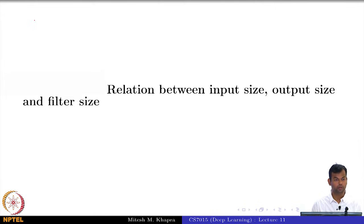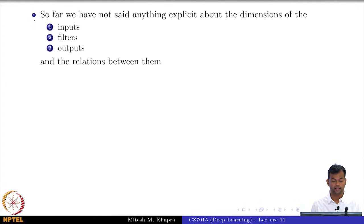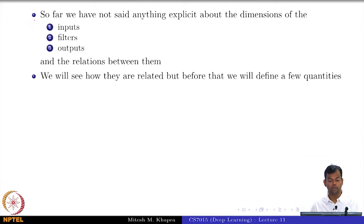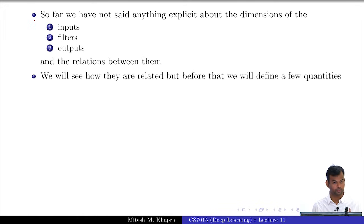Now we will go to the next module where we will try to learn the relationship between the input size, the output size, and the filter size. So far we have not said anything about the dimensions of the inputs - I have just been very vague that it is m cross n, and for the filter I have just said 3 cross 3, 5 cross 5. I am not even told you what the dimensions of the outputs are, except that the output dimension seems smaller than the input dimension. This computation is very important because these matrices tell you how many parameters you are going to have, what is the size of the memory that you need to load this entire network into.